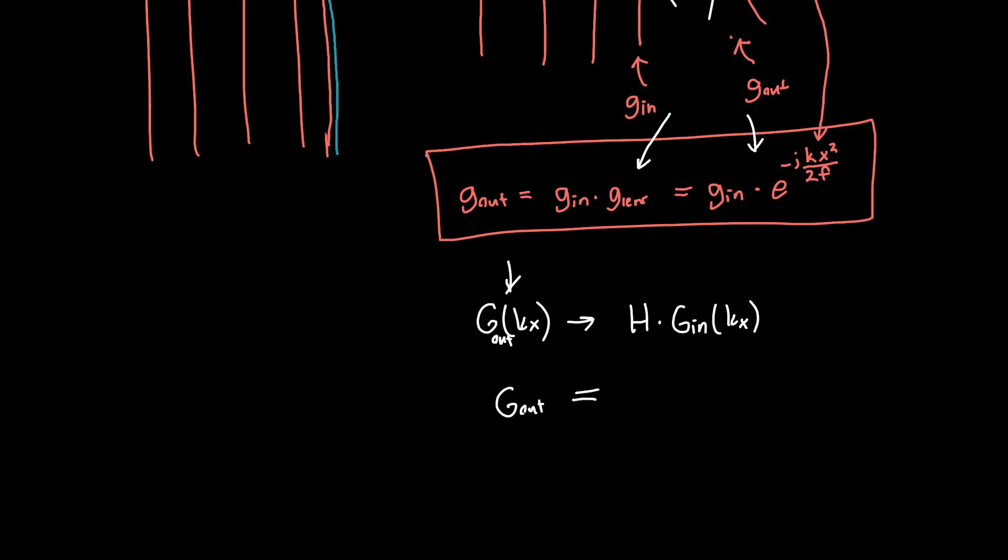G out in this case is actually equal to h convolved with g in of k x. That's kind of weird, and that's totally not what we would expect using the formalism of things like electrical engineering or signals and systems. Typically, we like our transfer functions to be multiplicative, but in this case, it's actually not. Lenses happen to be easier to deal with in space because they're performing multiplication in space.